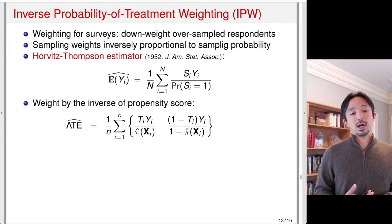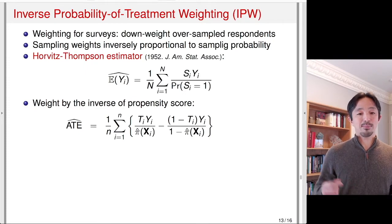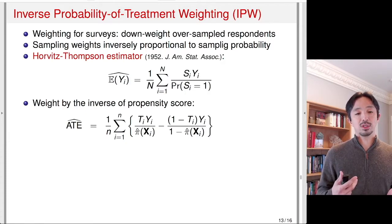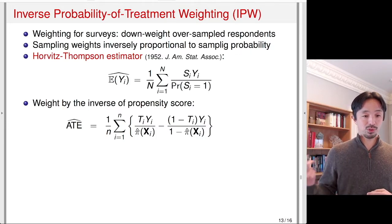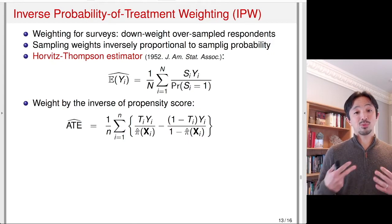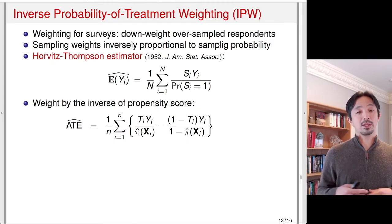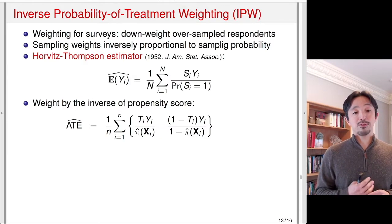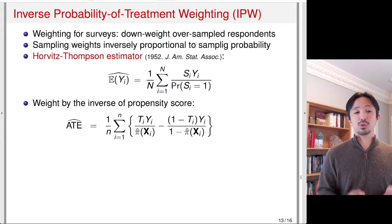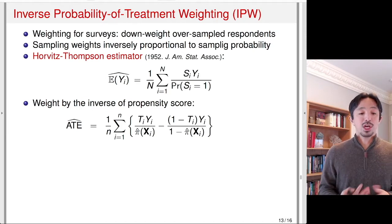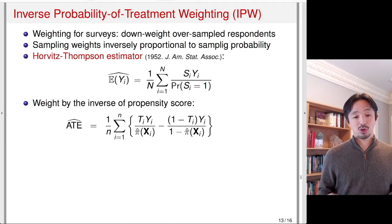We can use this idea for treatment effect estimation. You can think of the treatment assignment indicator as a sampling indicator. If t equals 1, you observe y(1) for that unit; if t equals 0, you observe y(0) for those units. If someone is more likely to be in the treatment group, when estimating the expected value of y(1), you need to downweight those observations. If someone is unlikely to be in the treatment group but happens to be in it, those observations need to be upweighted.